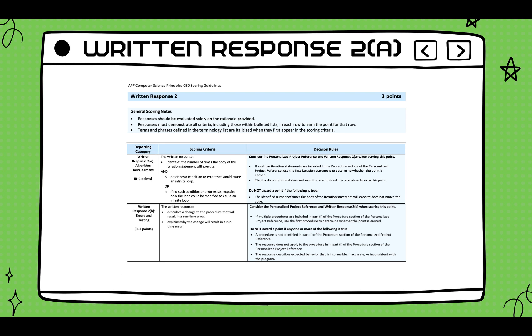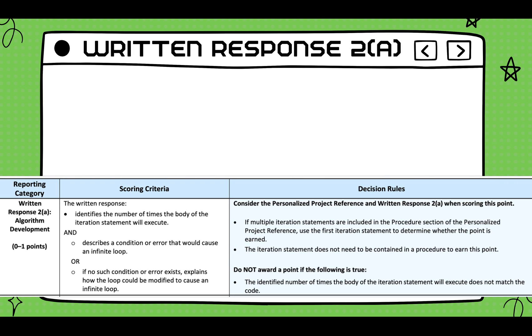The next row, number four, can be found on part two of the rubric. This one focuses on algorithmic design. The rubric asks you to identify the number of times the body of the iterative statement will execute and to describe a condition or error that would cause an infinite loop. If no such condition or error exists, explain how the loop could be modified to cause an infinite loop.